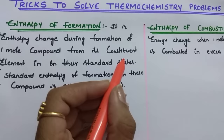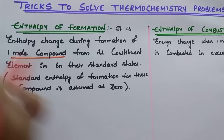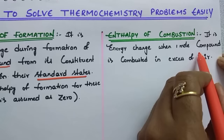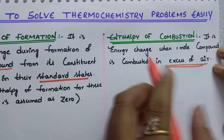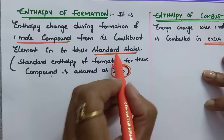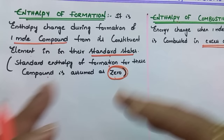The definition: enthalpy of formation is the enthalpy change during the formation of one mole of a compound from its constituent elements which are in their standard states. Enthalpy of combustion is the energy change when one mole of a compound is combusted in excess of air. The standard enthalpy of formation for elements in their standard states is assumed as zero.